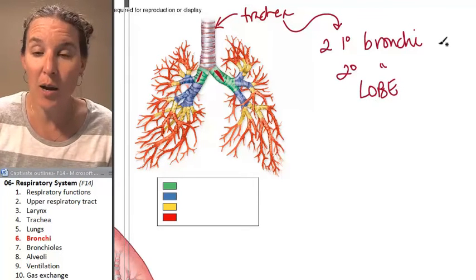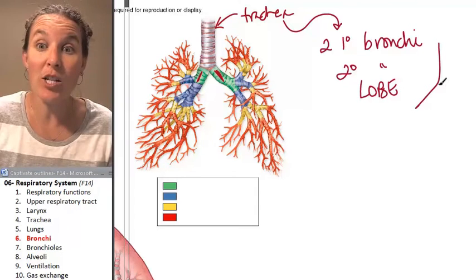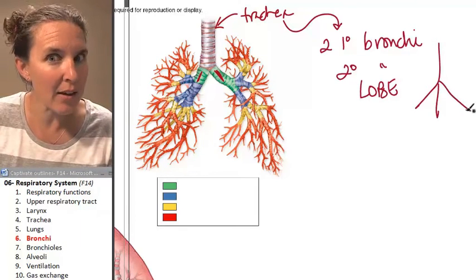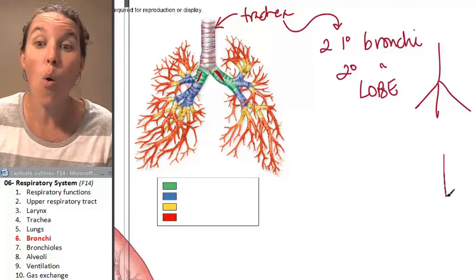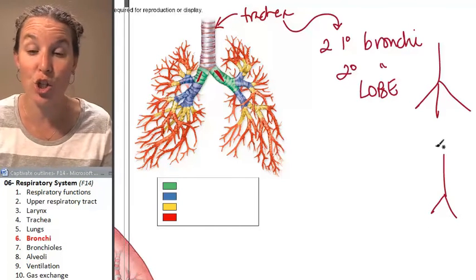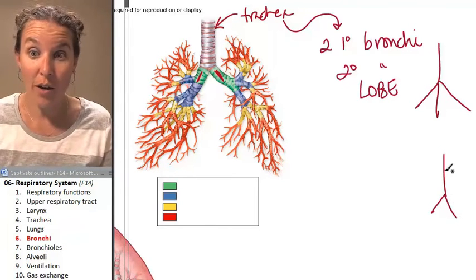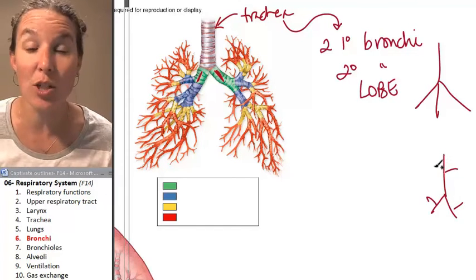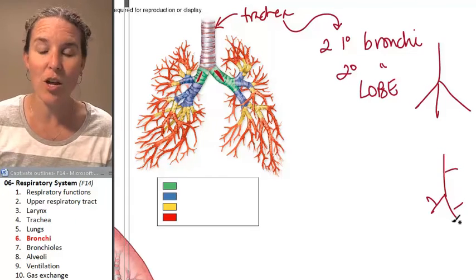So here comes a primary bronchus, and it branches into three secondary bronchi or two secondary bronchi. Here's an awesome question. I could show you a picture of primary bronchi, secondary bronchies, and say which lung is this from? And you should know that the secondary,